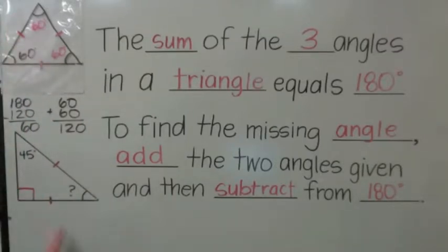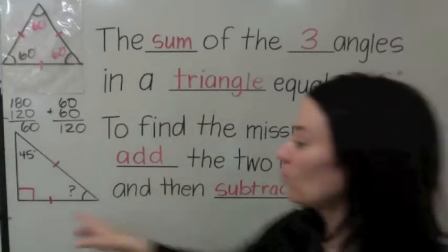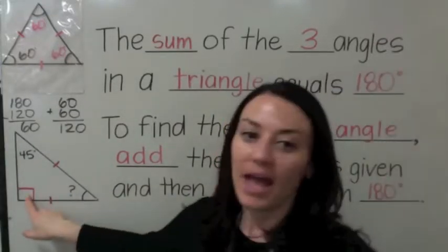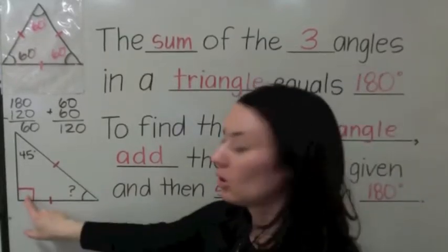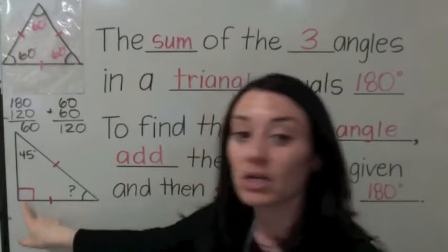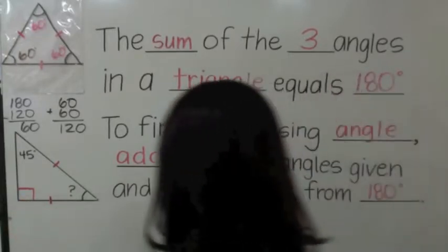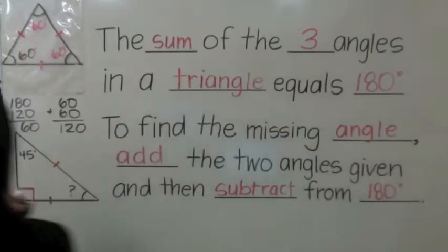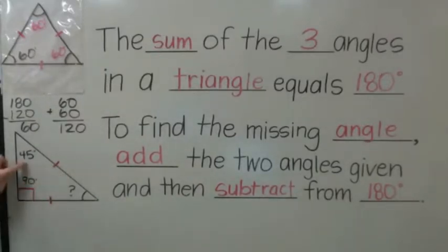This is called a special right triangle. How do I know it's a right triangle? It has a little box or square indicating this is 90 degrees. I know that this is 90. I'm given one of the angles — it's 45. What's the missing angle?